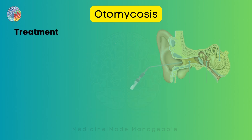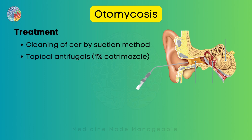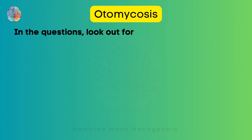The main treatment is cleaning of the ear by suction method, which removes all colonies and debris from the EAC. Topical antifungals can also be used, for example 1% clotrimazole and 2% salicylic acid in alcohol.